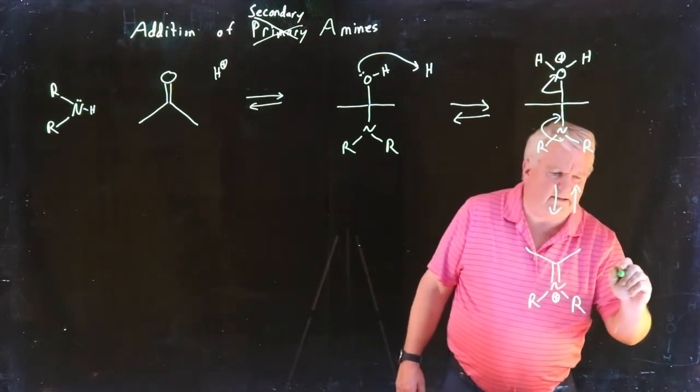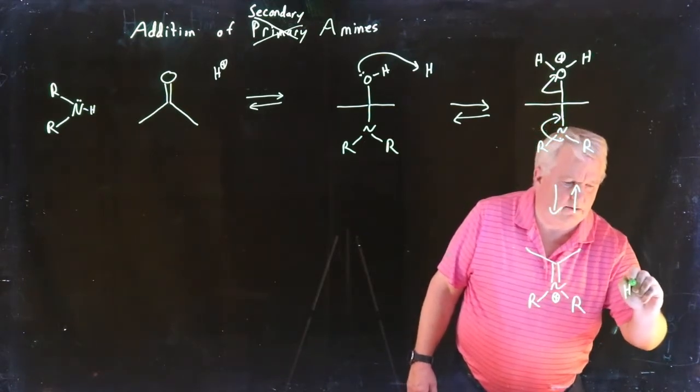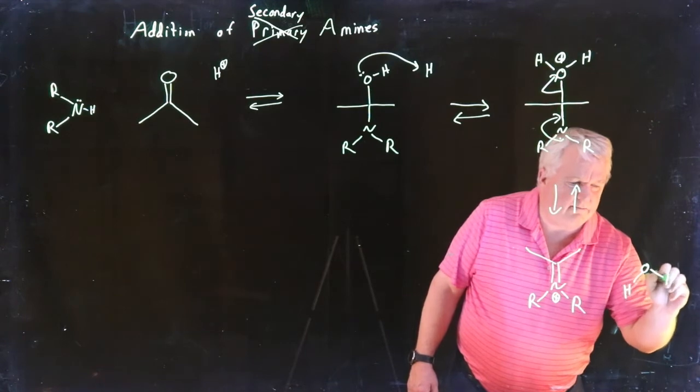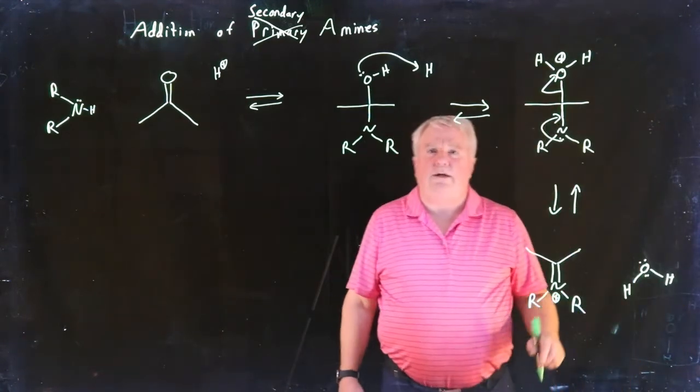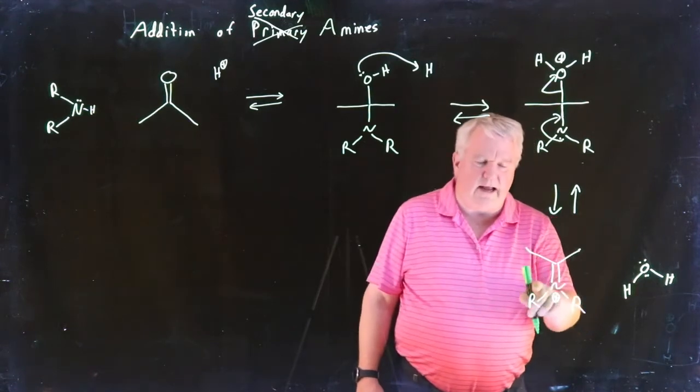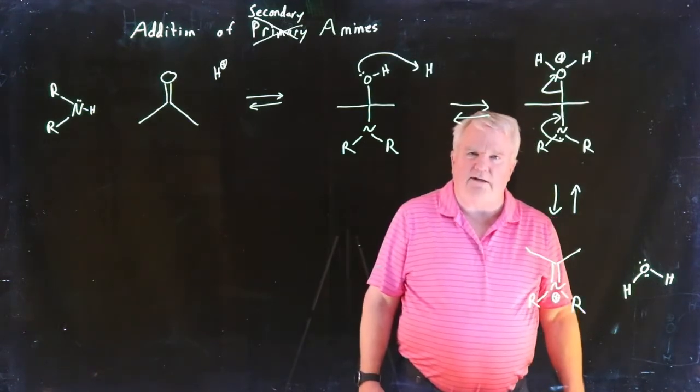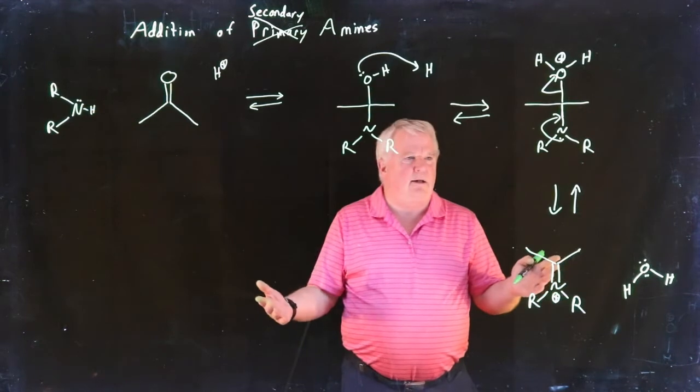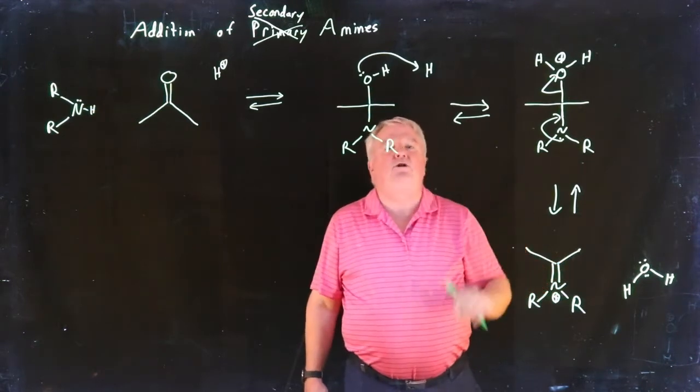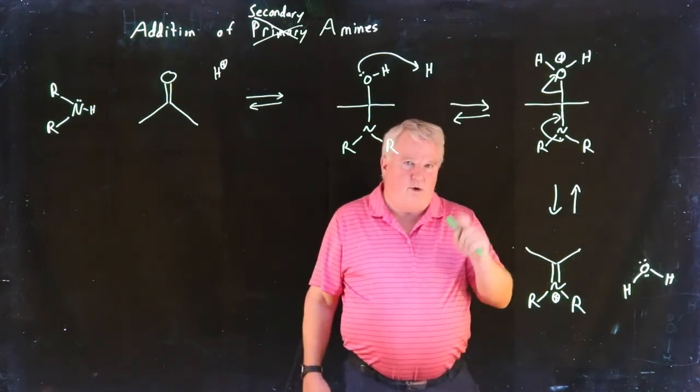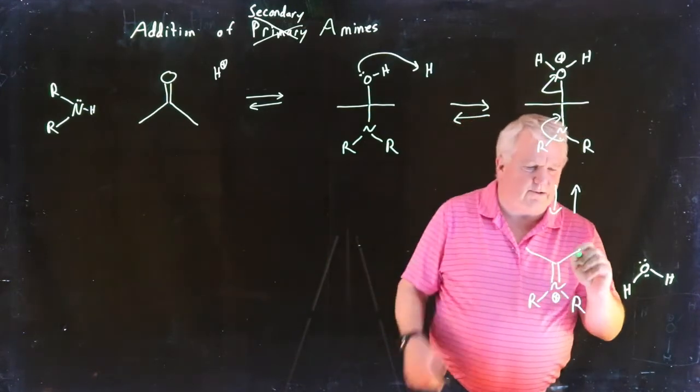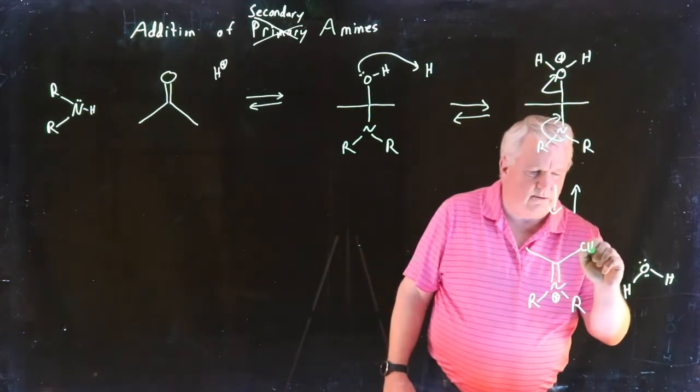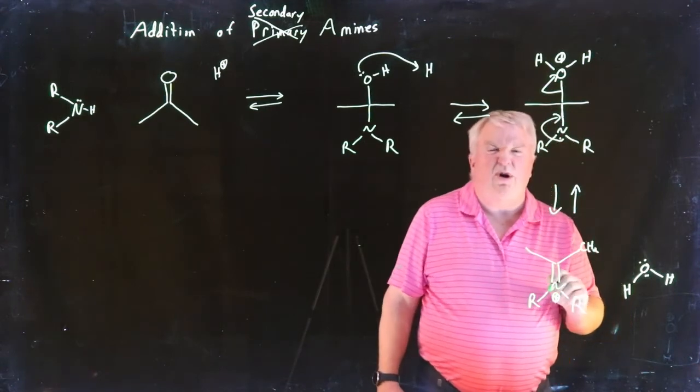One slight difference: remember last time we got to the imine by pulling a proton off of the nitrogen. Only now there are no protons on the nitrogen. So what is going to happen here? Is this reaction just going to go back and no reaction occurs? No! Never forget Grossman's rule. Grossman's rule is just put all of the relative hydrogens on.